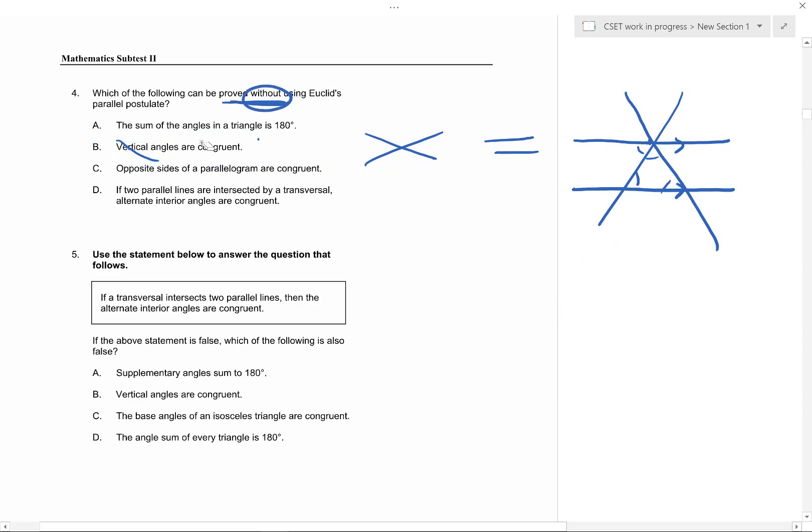Five is the same idea. If the statement is false about parallel lines, we could still talk about supplementary angles summing to 180 degrees because that's simply the definition of supplementary, that has nothing to do with proving anything. We could certainly still prove that vertical angles are congruent because that has nothing to do with parallel lines.